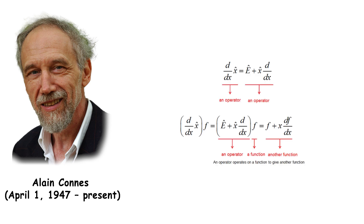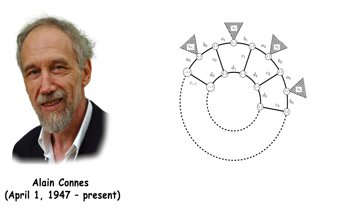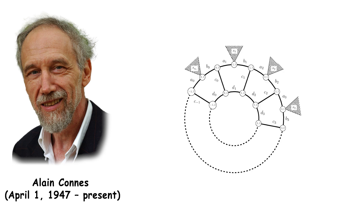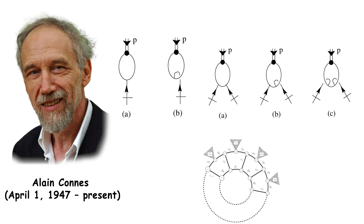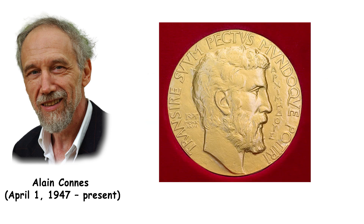Alain Connes is a French mathematician distinguished for his work in operator algebras and non-commutative geometry. He developed the theory of non-commutative spaces, providing new insights into quantum mechanics and space-time geometry. Connes received the Fields Medal in 1982, recognizing his innovative contributions that bridged multiple areas of mathematics.